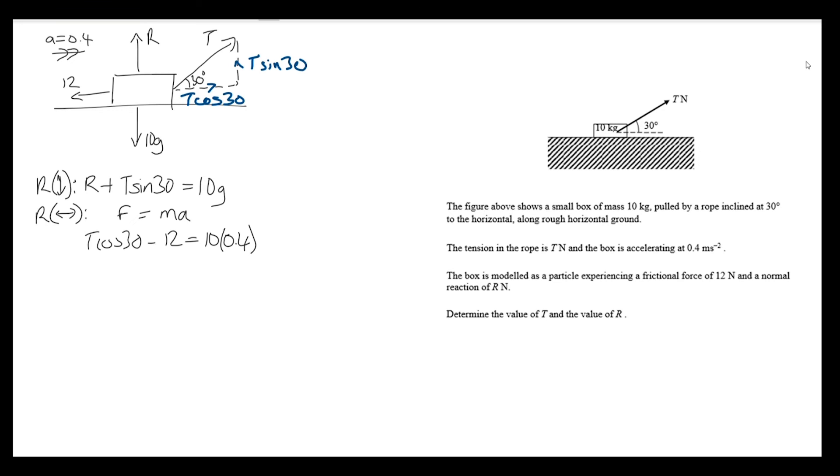From here I only have one unknown, so it's fine to solve for t from this equation and then substitute to find the other solution. Some sensible rearranging here, isolating t by adding 12 to the right hand side and dividing by cosine 30. That gives us 32 over root 3, or to three significant figures, 18.5 newtons.